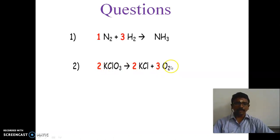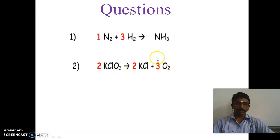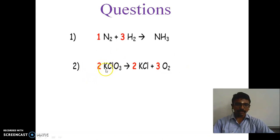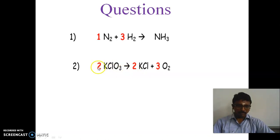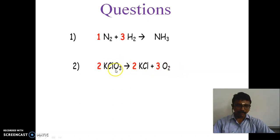We have to answer which is reactant and which is product. Potassium chlorate, KClO3, is the reactant, and the products are potassium chloride and oxygen. Now whether the equation is balanced: potassium K has 2 atoms on each side, chloride has 2 on each side, and oxygen has 2×3=6 on the left and 3×2=6 on the right. So the equation is balanced.